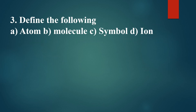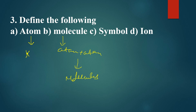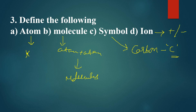Next, he is asking about atom, molecule, symbol, and ion. An atom is the smallest particle of matter — according to John Dalton, it cannot be further divided. A molecule is formed when atoms are combined together. A symbol is the shorthand representation of an element; for example, instead of writing carbon, you write C. An ion is a charged particle, whether positive or negative — we call it an ion.